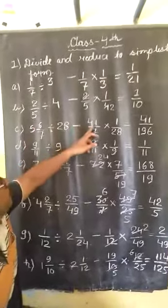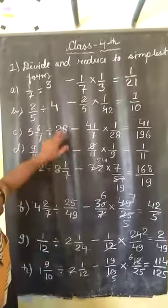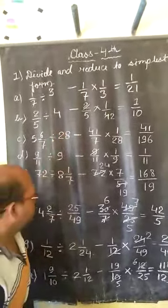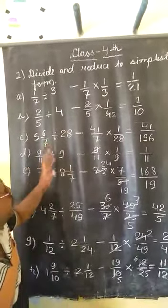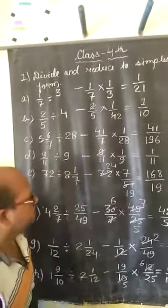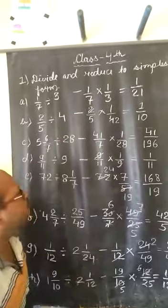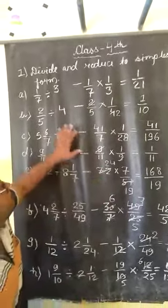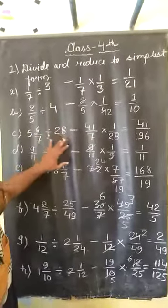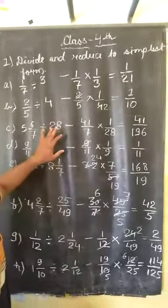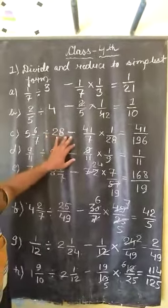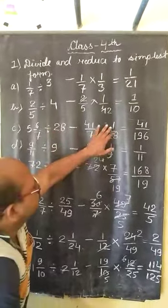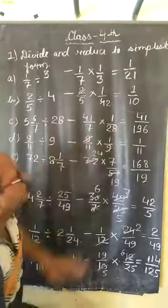We make the reciprocal of 28. Because the divide is the opposite sign of multiplication, and multiplication is opposite sign of divide. So when we change the sign to multiplied, we make it reciprocal of 28. Reciprocal means inverse, it will be 1 upon 28.